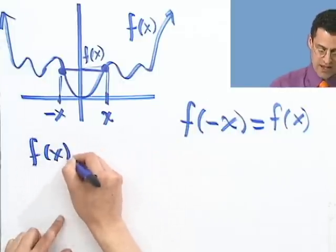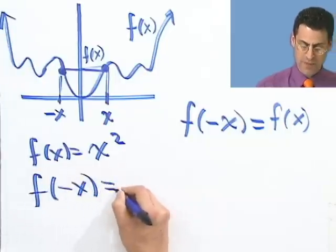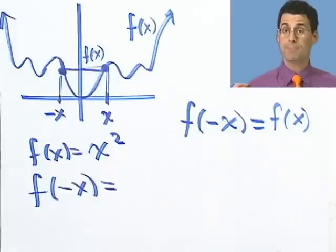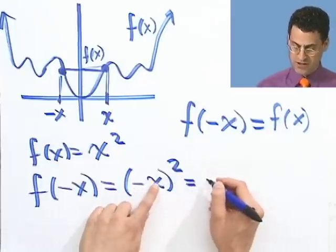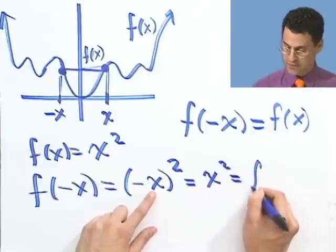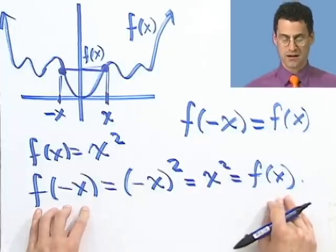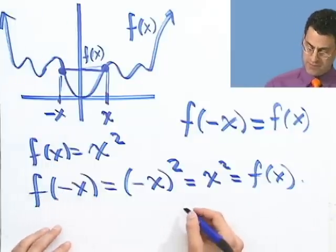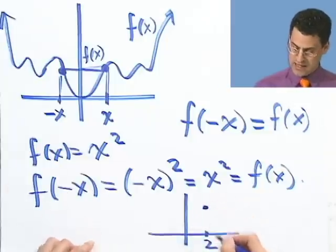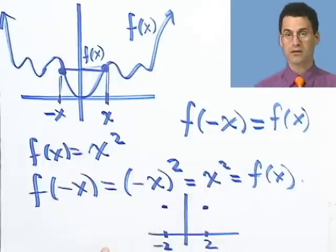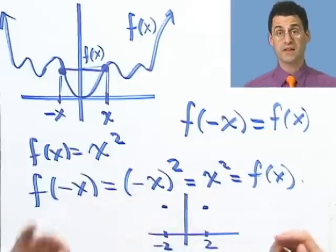For example, let's look at f(x) = x². What happens if I compute f(-x)? Wherever I see x, I plug in -x, so I get (-x)². Well, (-1)×(-1) = 1, so this is just x², which equals the original function. So this function is even: f(-x) = f(x). In terms of the picture, if I plug in 2 I get 4, and if I plug in -2 I also get 4 — that's the reflection, and we say the function is even.